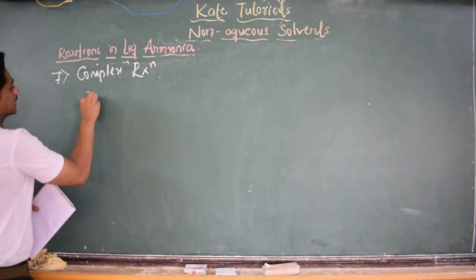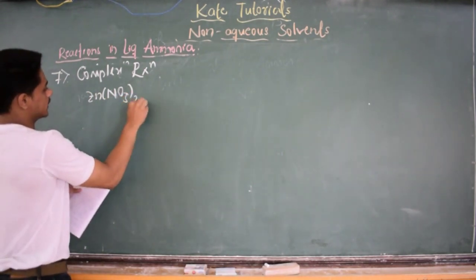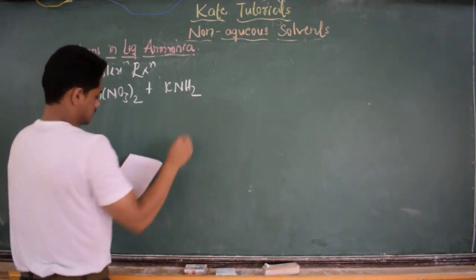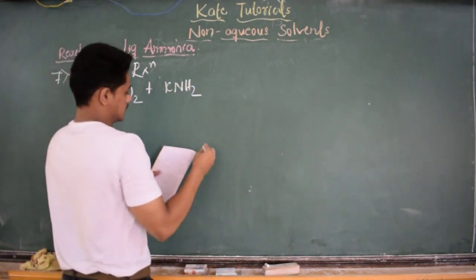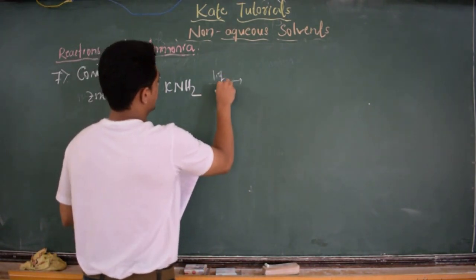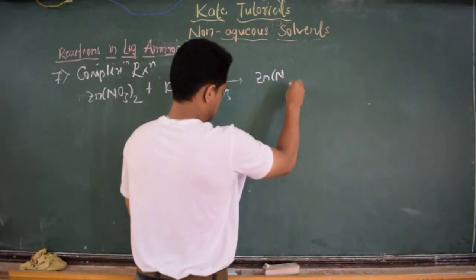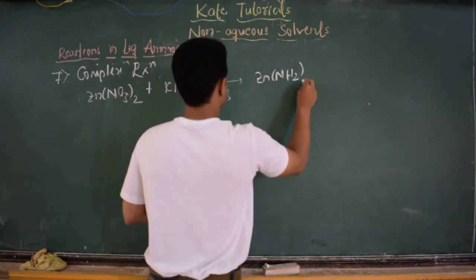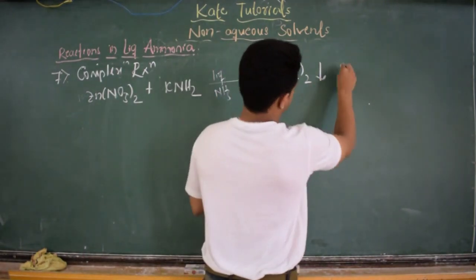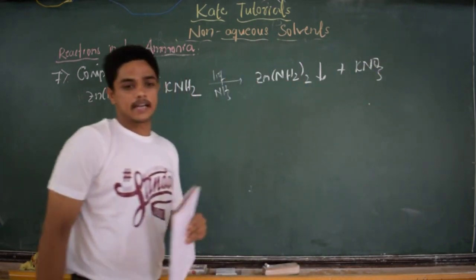Consider zinc nitrate, Zn(NO3)2, when reacted with KNH2 — potassium amide — in liquid ammonia. What happens is Zn(NH2)2 is going to be precipitated, and we get KNO3 — potassium nitrate — as the other product.